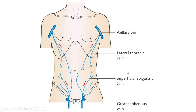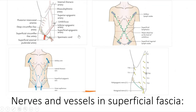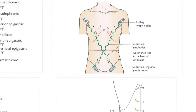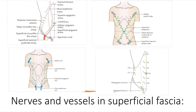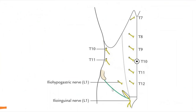For cutaneous veins, the lateral thoracic vein drains upward into the axillary vein above the umbilicus, and the superficial epigastric vein drains downward into the great saphenous vein below the umbilicus. For lymphatic drainage, above the umbilicus lymphatics drain via superficial vessels into the axillary lymph nodes, and below the umbilicus they drain into the superficial inguinal lymph nodes.